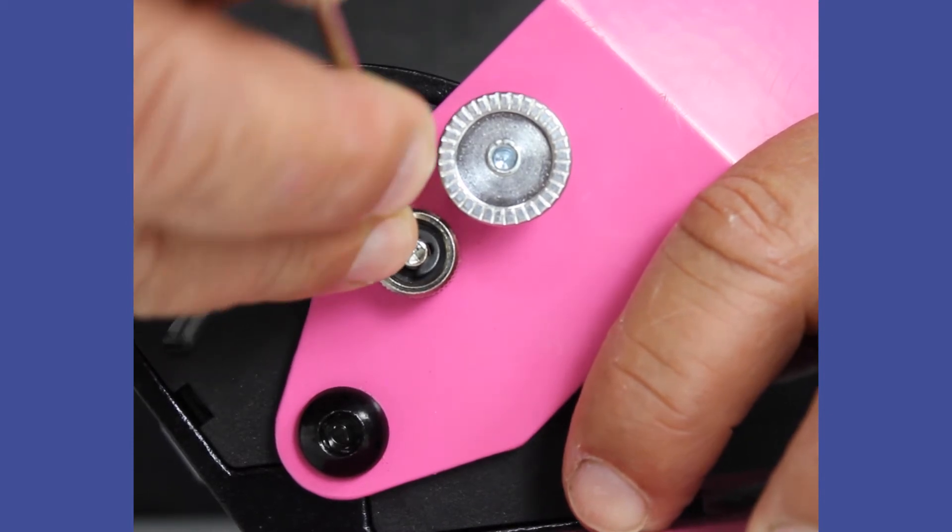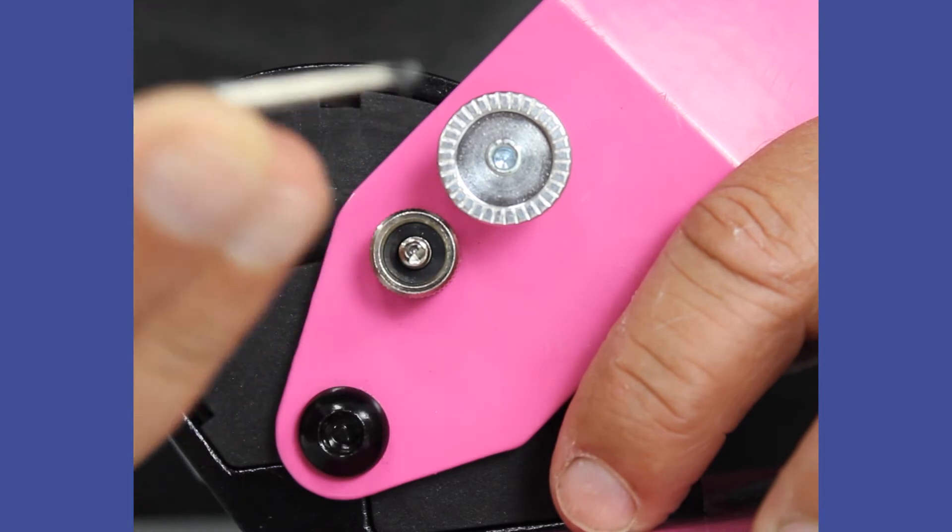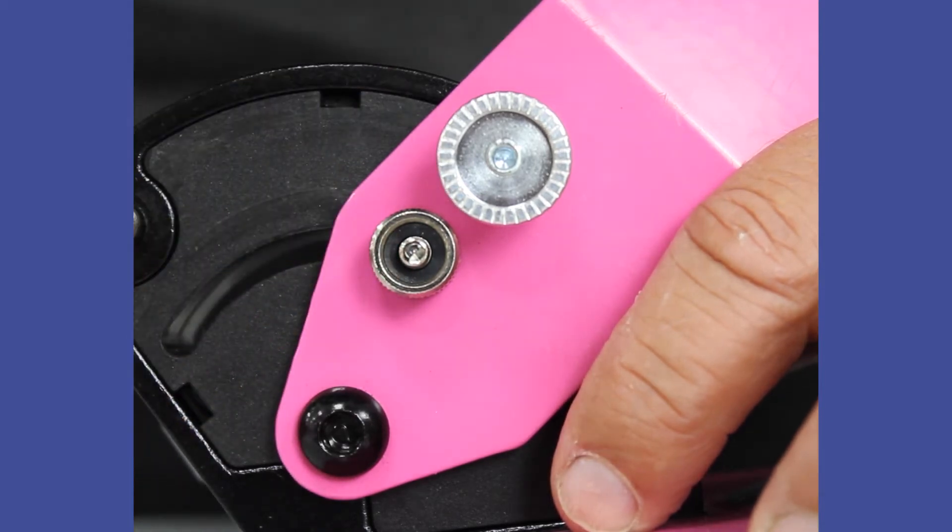So we've just got a little pick, and we just get it in the little gap, and I'm just going to work it out. So there we go, we've got the little C-clip there, and we're just going to put that to one side.